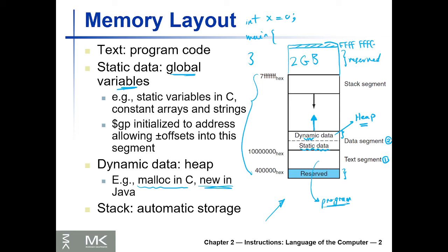The third portion is the stack segment, which starts somewhere in the upper area and grows downward. Whenever you want to store a new variable in the stack, you decrease the stack pointer — for example, by 4 bytes if it's a 4-byte variable.